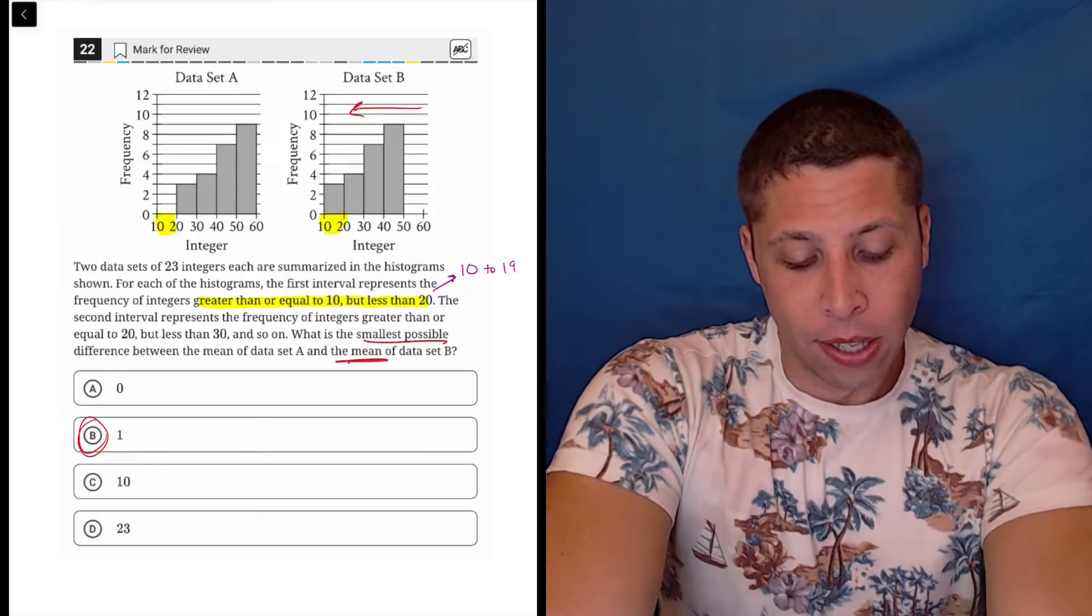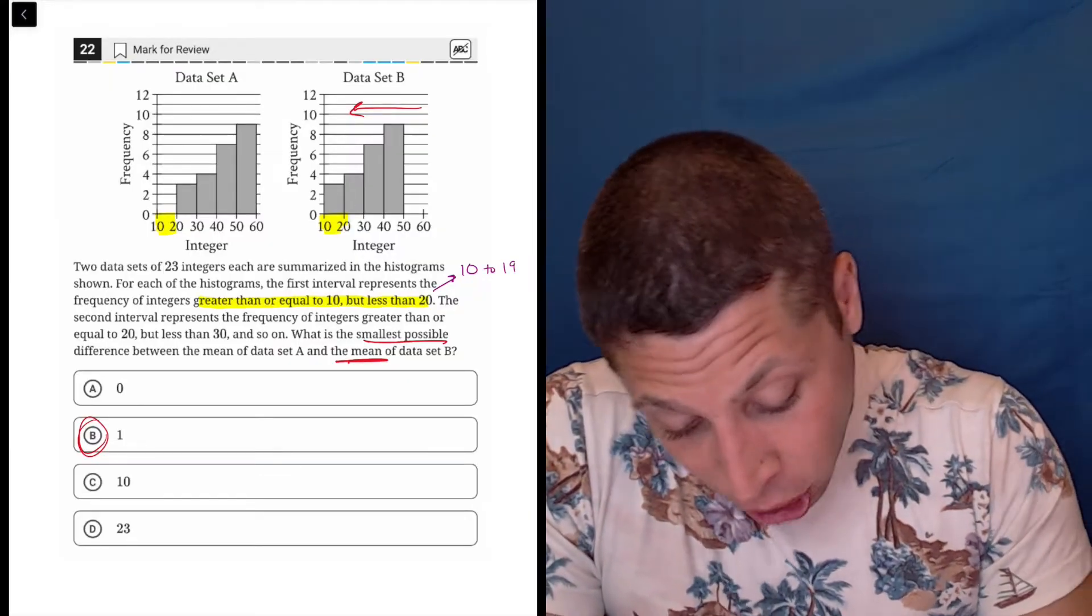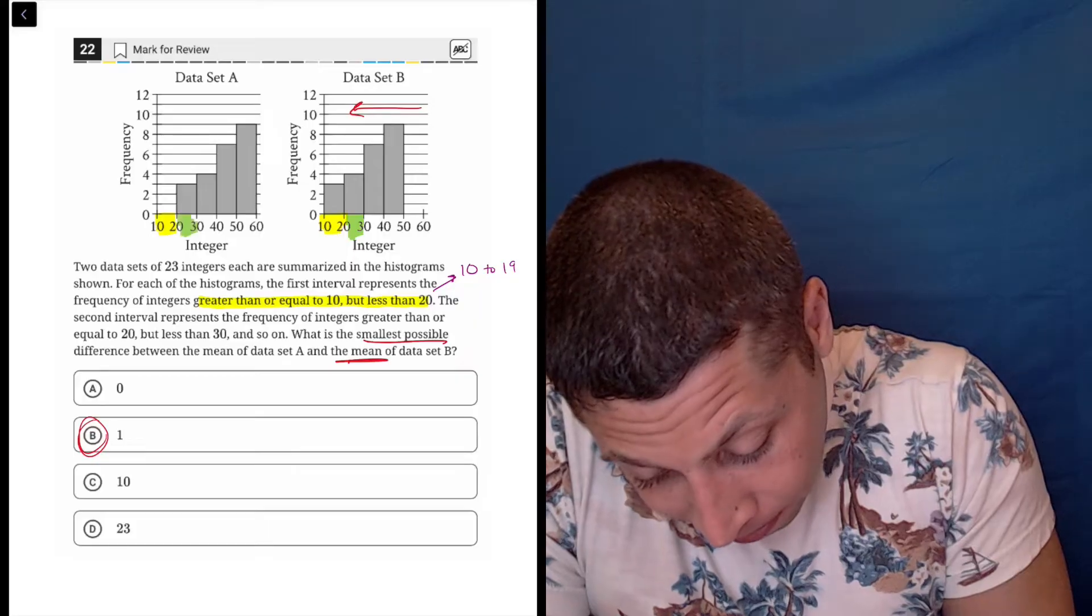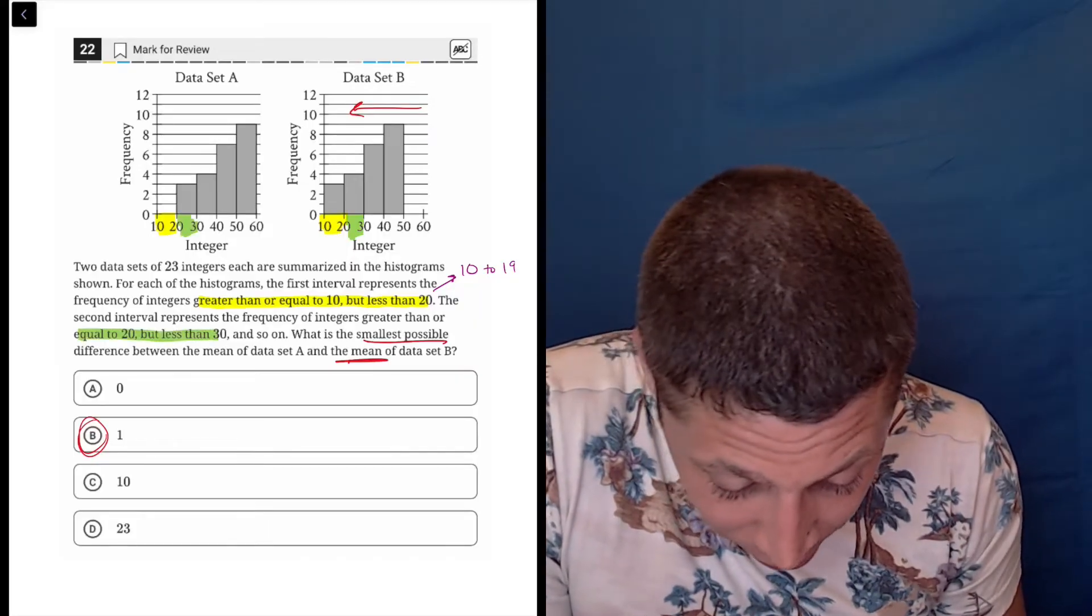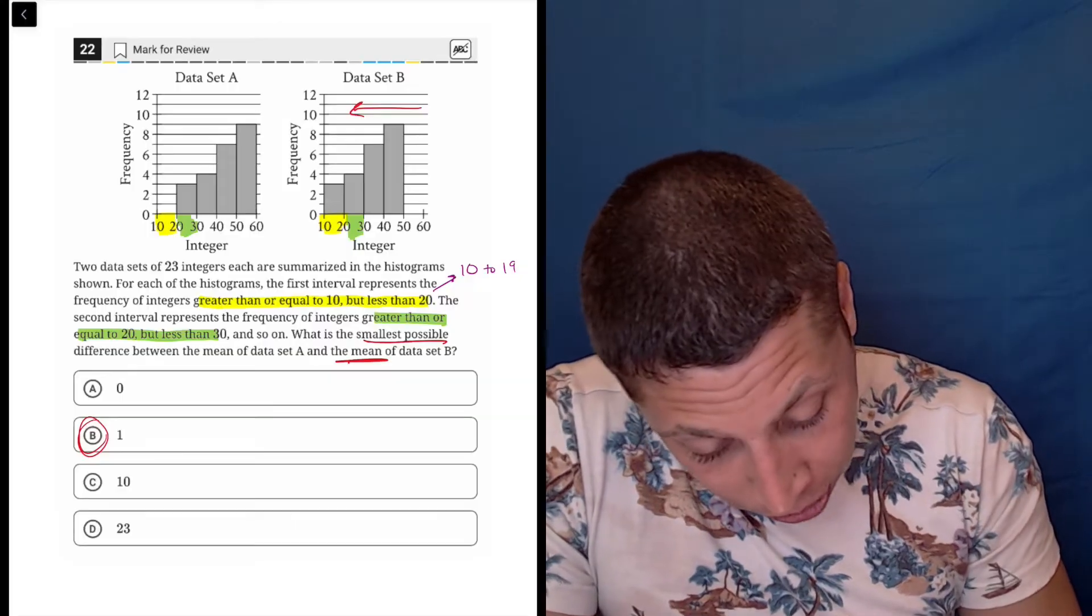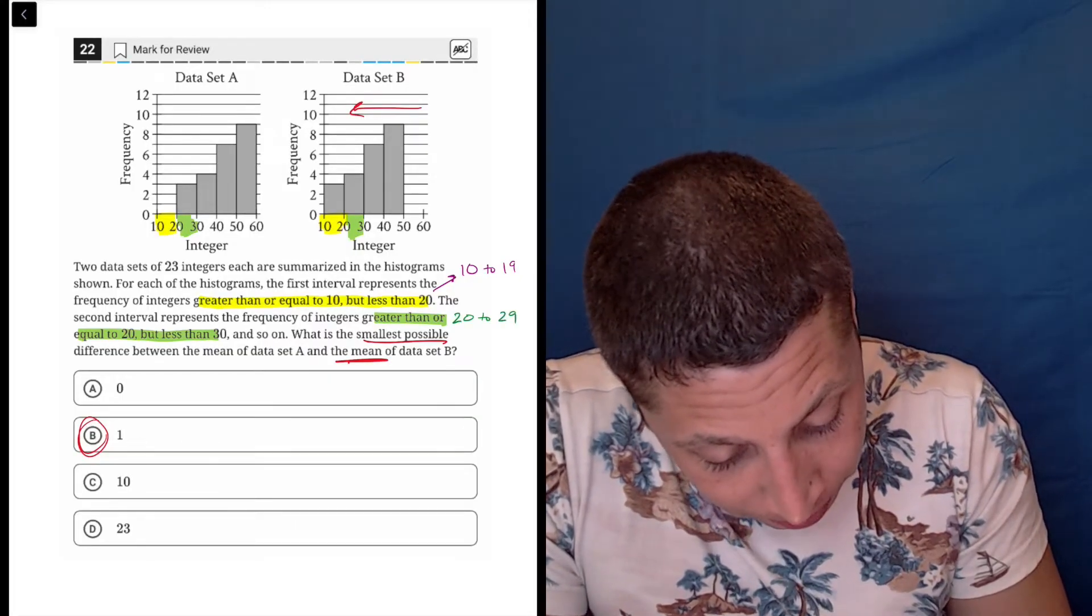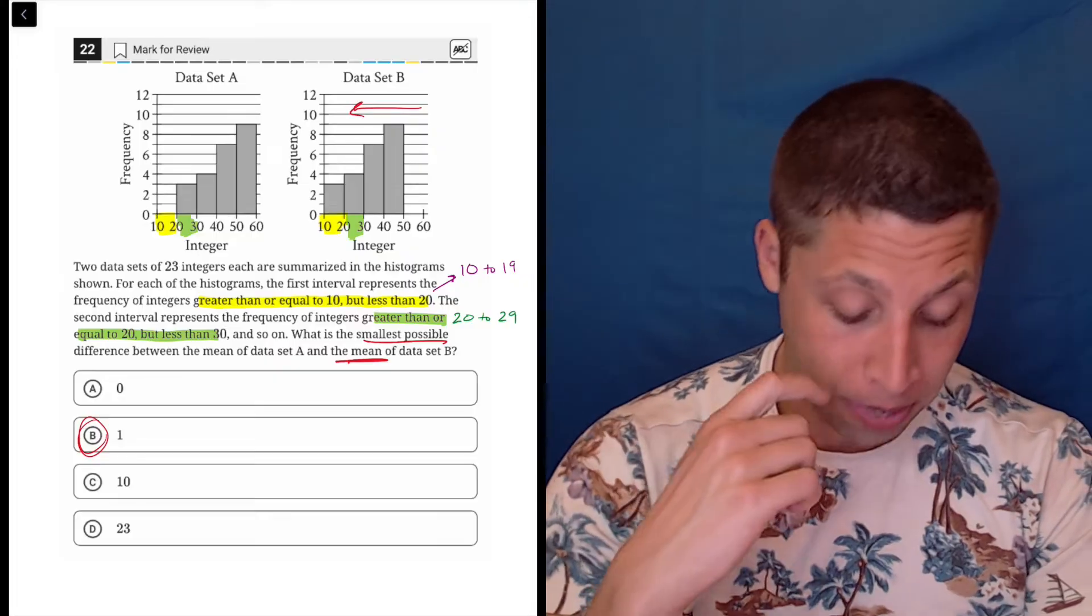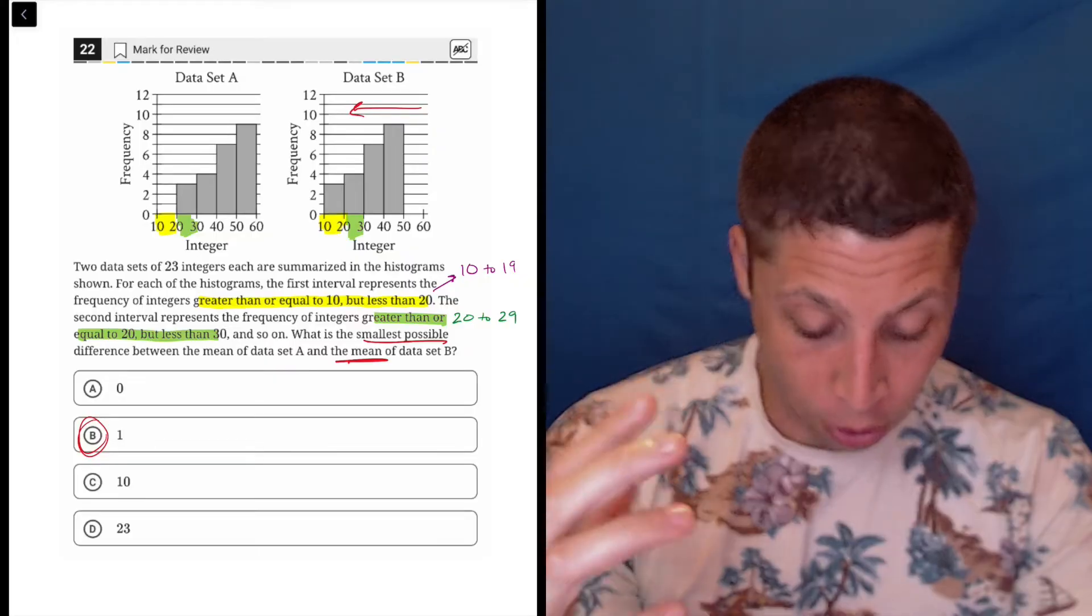So 10 to 19. And then the next chunk here, in which they do label, would be the numbers 20 to 29. Greater than or equal to 20, but less than 30.